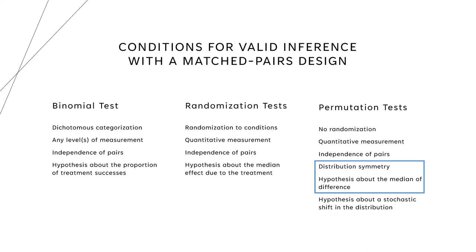We can still test that even if we have distribution symmetry, because distribution symmetry is a stronger condition, and we can still test hypotheses even if the conditions are stronger than what we need for valid inference.